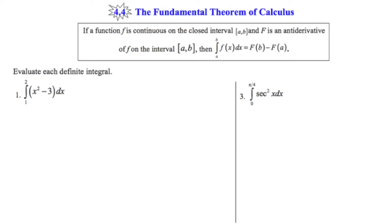What we're going to do to evaluate a definite integral is we're going to find the antiderivative. And once we find that antiderivative, we're going to substitute in twice. The first thing we're going to substitute in is the upper limit of integration B. And then we're going to substitute in the lower limit of integration A. And then we're going to subtract the results of the two. And that's going to give us the evaluation of this thing called a definite integral. I think the best way to understand the Fundamental Theorem of Calculus is to look at a couple of examples, so let's do that now.